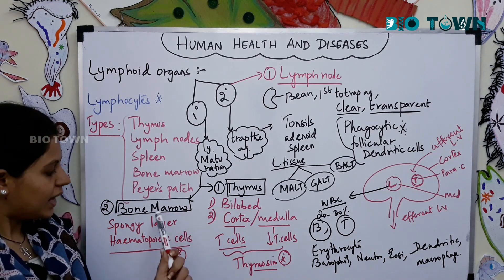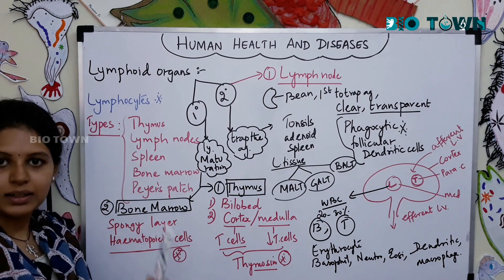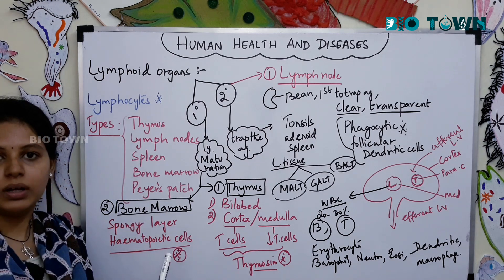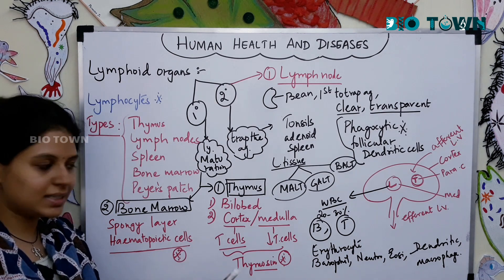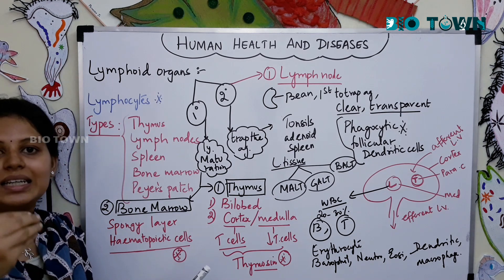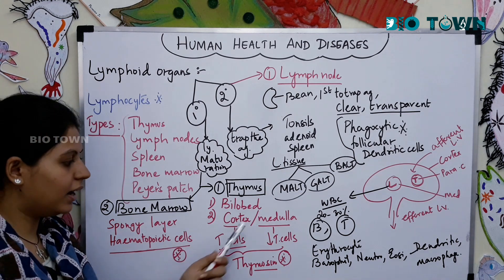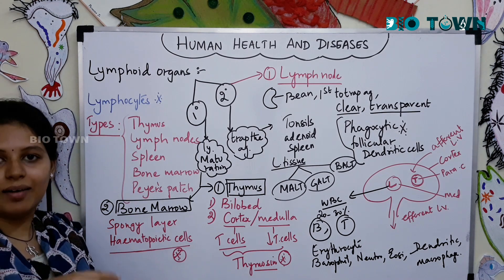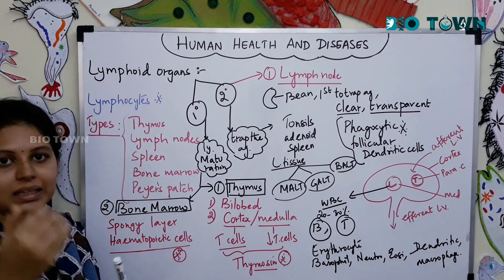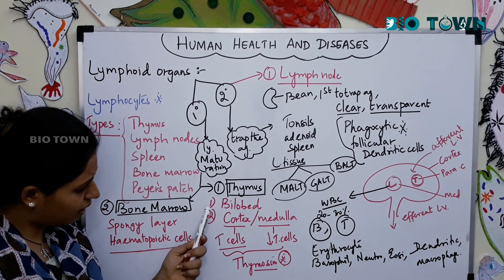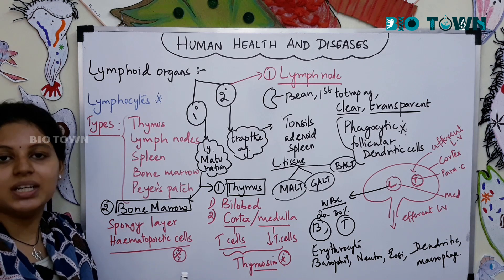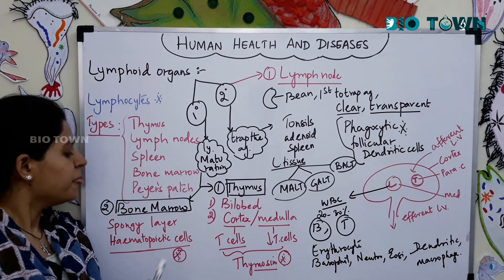The two primary lymphoid organs are the thymus and bone marrow. The thymus is present on the sternum in the thoracic cavity and is a bilobed organ. It has an outer covering called the cortex and an inner covering called the medulla. The cortex is rich in T-cells, while the medulla is sparsely covered with T-lymphocytes. The thymus produces a secretion called thymosin which helps the lymphocytes mature.